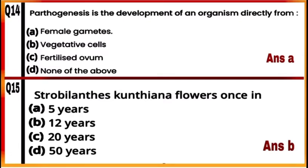Question 15: Strobilanthes kunthiana flowers once in 12 years, so option B is the correct answer. Its mass flowering transformed large tracts of hilly areas in Kerala, Karnataka, and Tamil Nadu into blue stretches and attracted a large number of tourists.